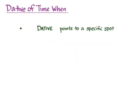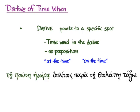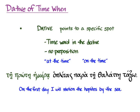With the dative, we're pointing to a specific spot. Again, you'll get a time word in the dative with no preposition. Depending on the English time word, you will translate 'at the time' or 'on the time' — we can say 'at 12 o'clock' or 'on the first day.' In Greek, we simply have it in the dative. 'Te prote hemera hoplitas parate thalate taxo' — on the first day I will station the hoplites by the sea. It points to that particular specific spot in time, and it can be modified, as here with 'first.'